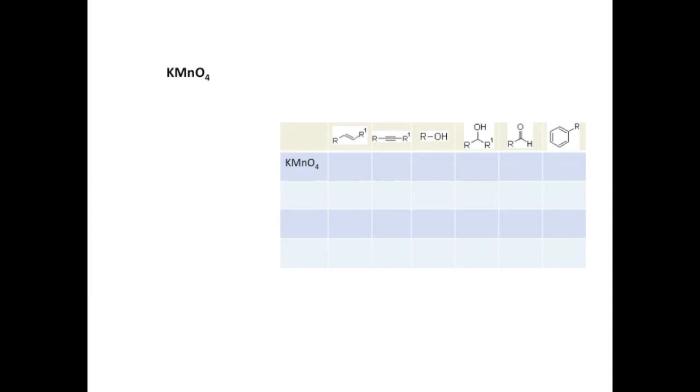The big oxidizing agent that you should know for the MCAT is KMnO4, potassium permanganate. As a rule, it will oxidize functional groups all the way to carboxylic acid. If you see KMnO4 on the test, think carboxylic acid product right away.